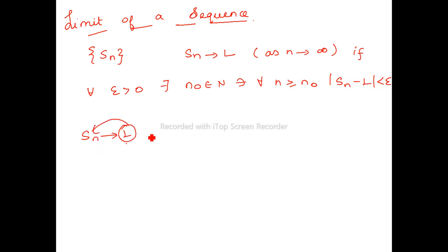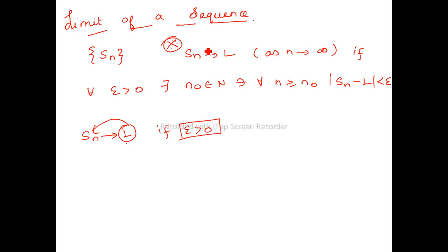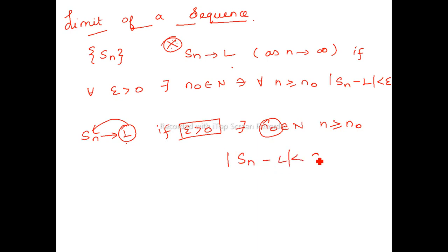So when do we say that SN approaches L? Given for every epsilon positive — this is some radius — there exists some stage n0 belonging to the natural numbers. This is the very base and foundation for convergence of a sequence. If you are strong enough in limit of a sequence, then convergence of a sequence would be very easy. After that stage, your sequence must satisfy the condition that |SN minus L| is less than epsilon.